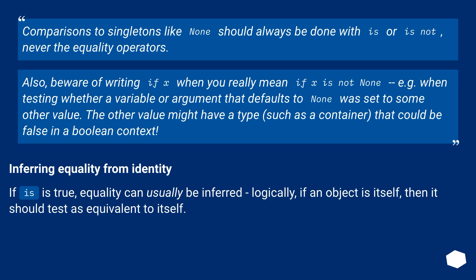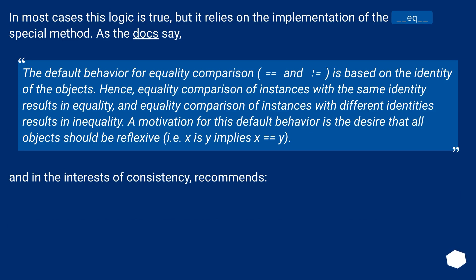Inferring equality from identity. If is is true, equality can usually be inferred. Logically, if an object is itself, then it should test as equivalent to itself. In most cases this logic is true, but it relies on the implementation of the underscore eq underscore special method. As the docs say, the default behavior for equality comparison, equals equals and not equal, is based on the identity of the objects. Hence, equality comparison of instances with the same identity results in equality, and equality comparison of instances with different identities results in inequality. A motivation for this default behavior is the desire that all objects should be reflexive, i.e. x is y implies x equals equals y. And in the interest of consistency, recommends.